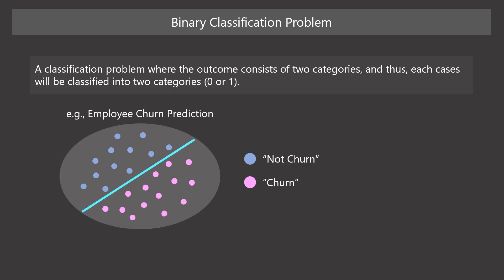The most simple case of classification is a binary classification problem. In a binary classification problem, the outcome variable can take only two values. For example, using employee data, we can predict who will churn and who will not. Here, the outcome variable can take two categories, churn or not churn.